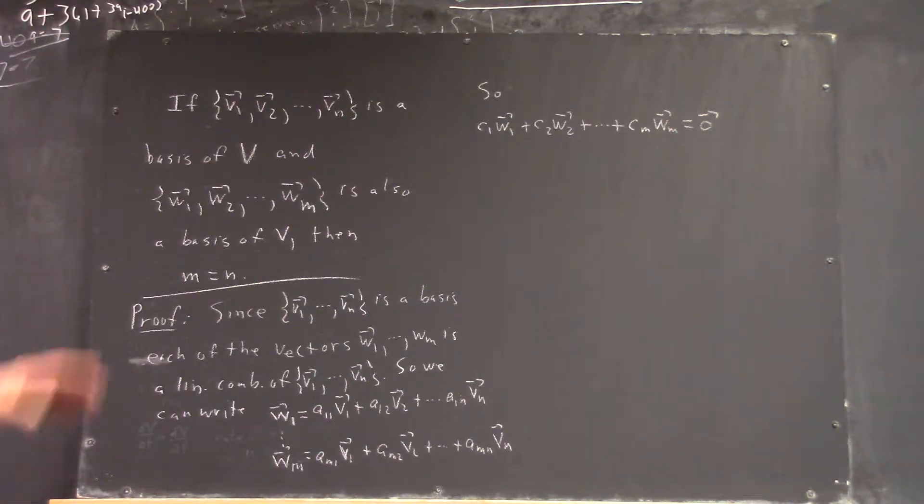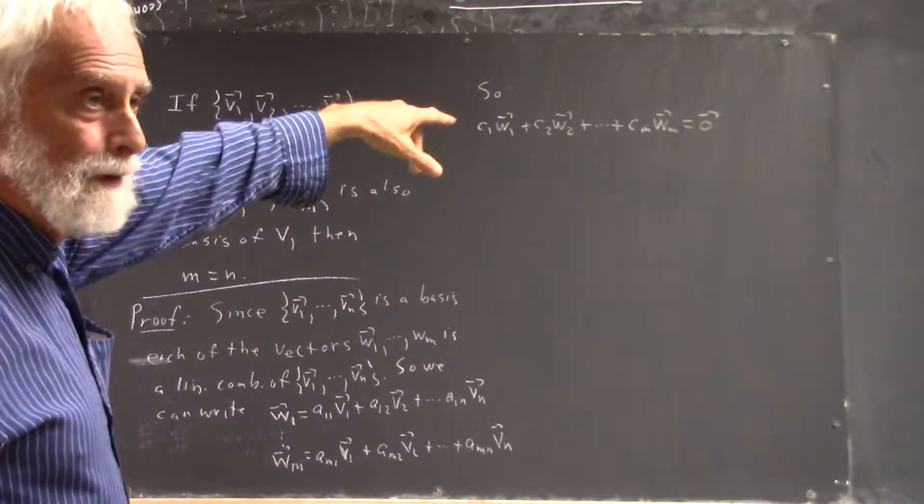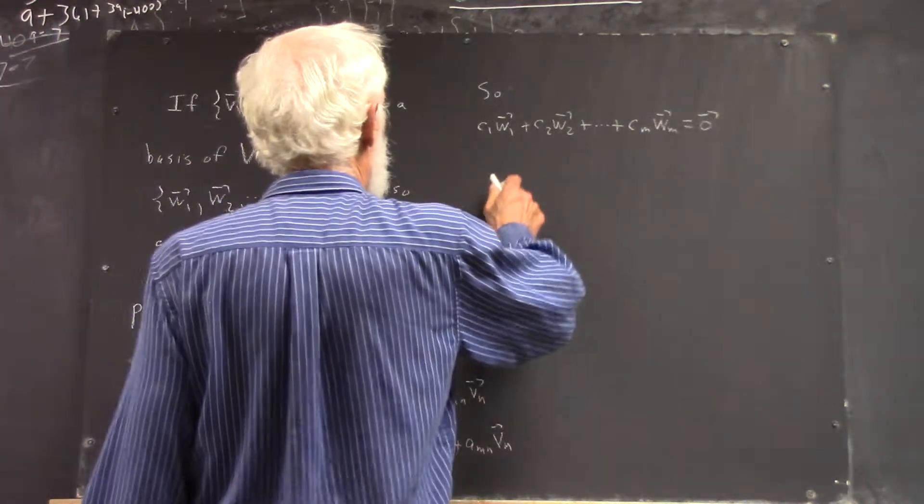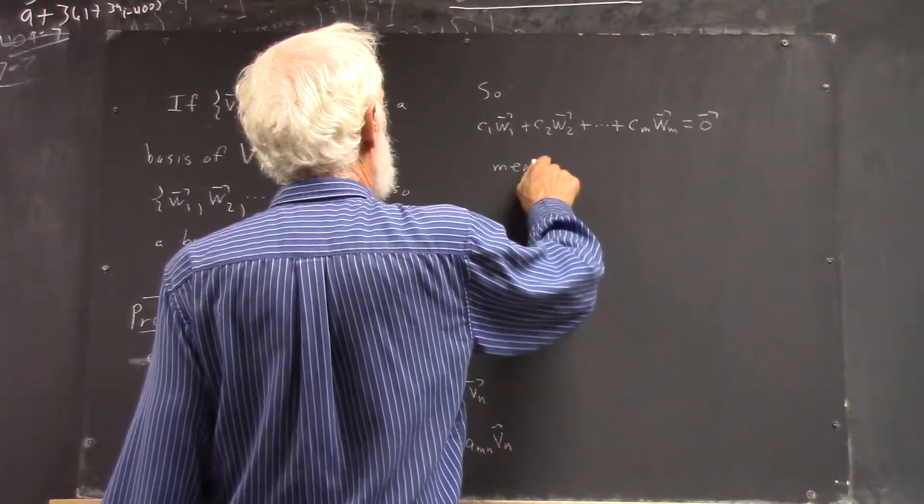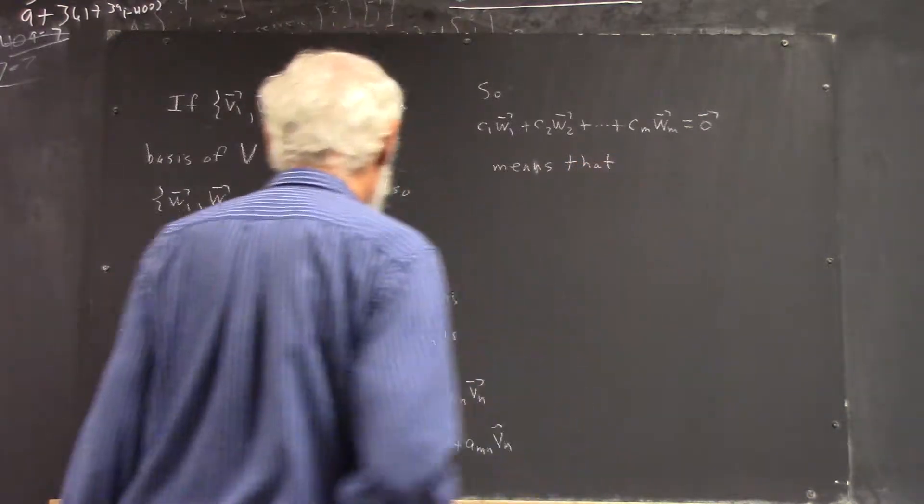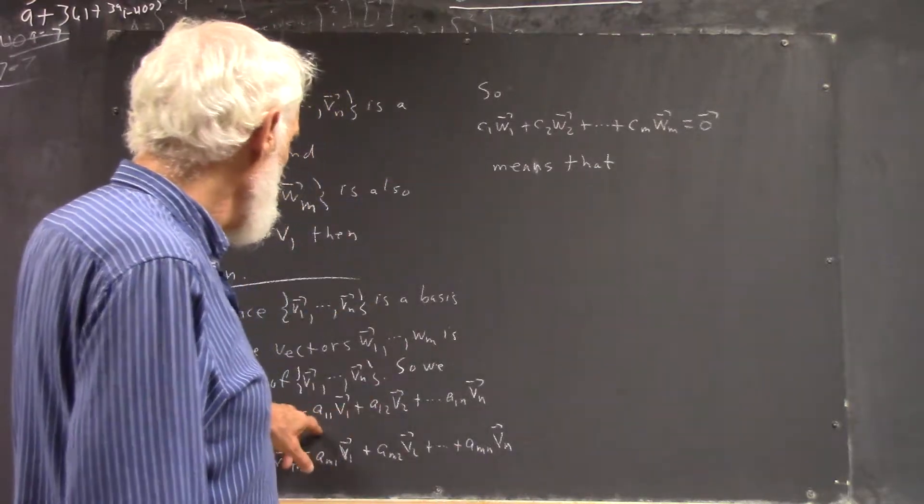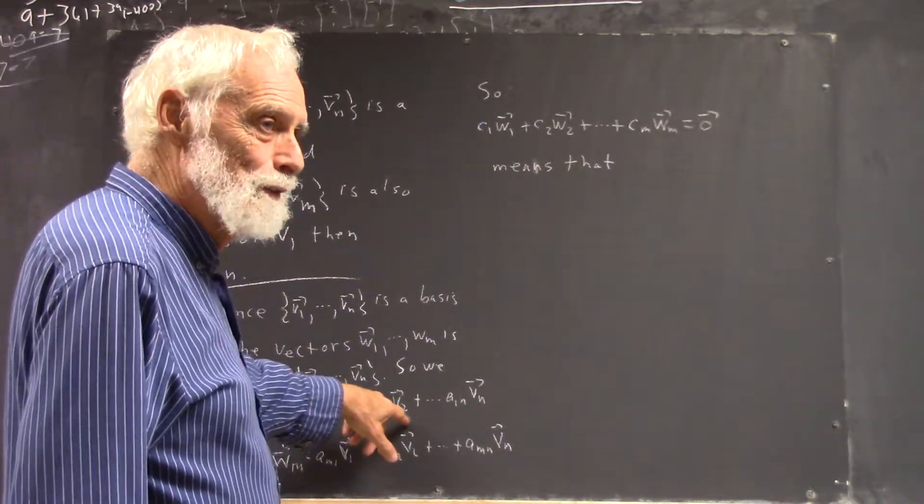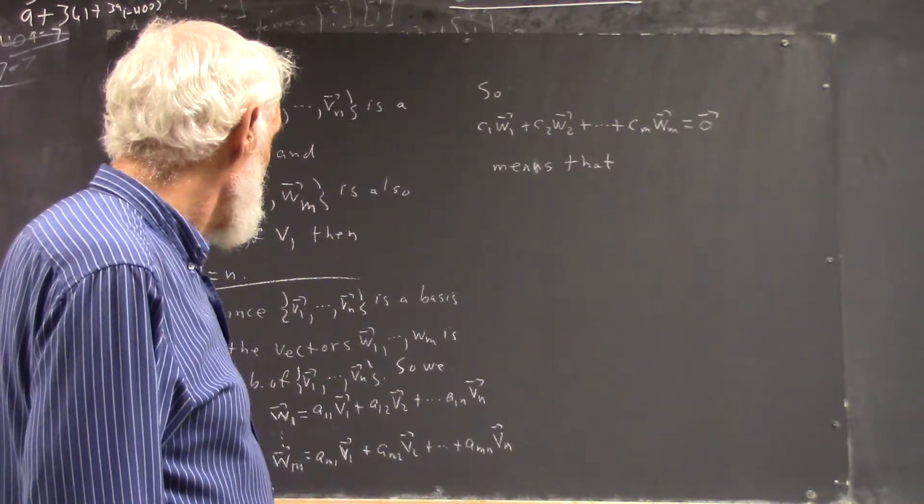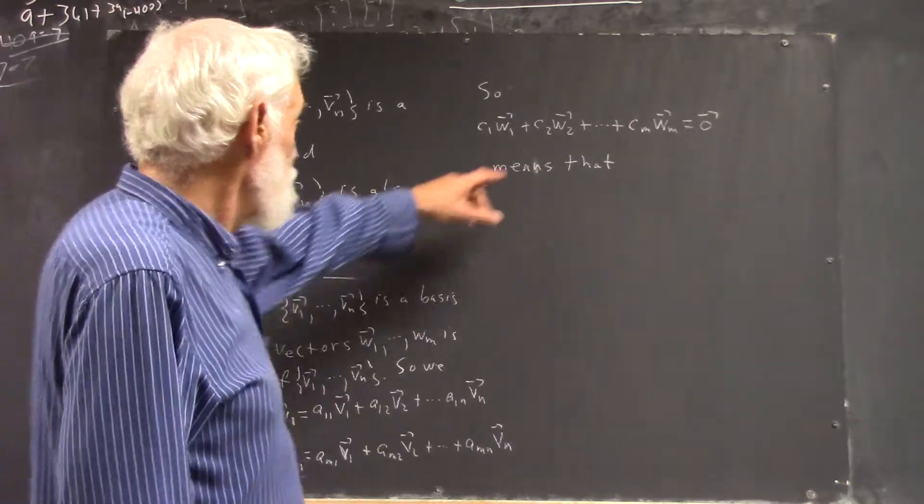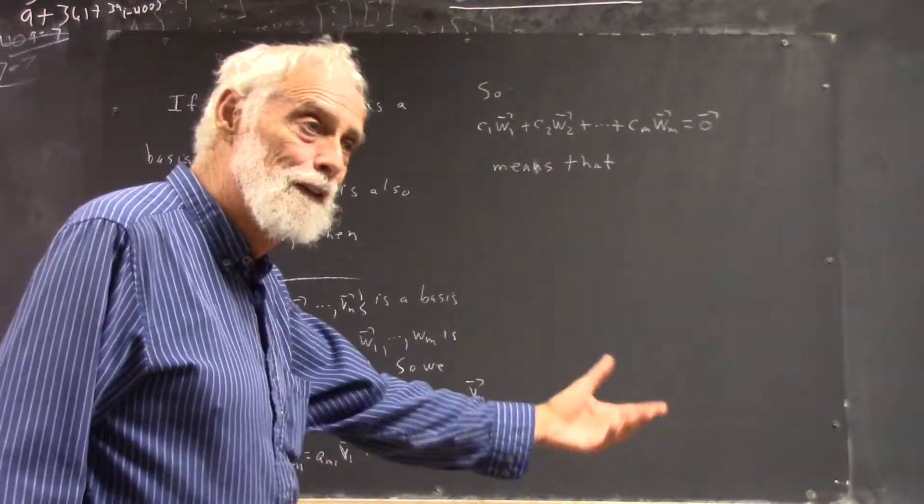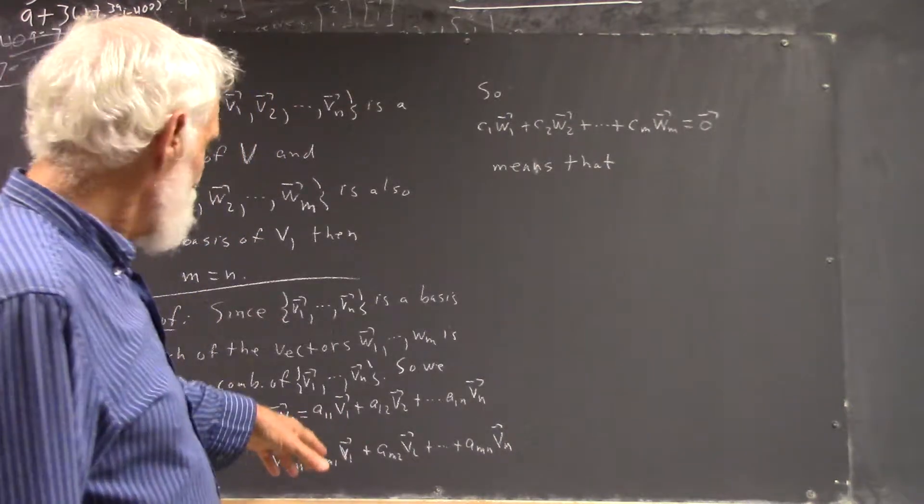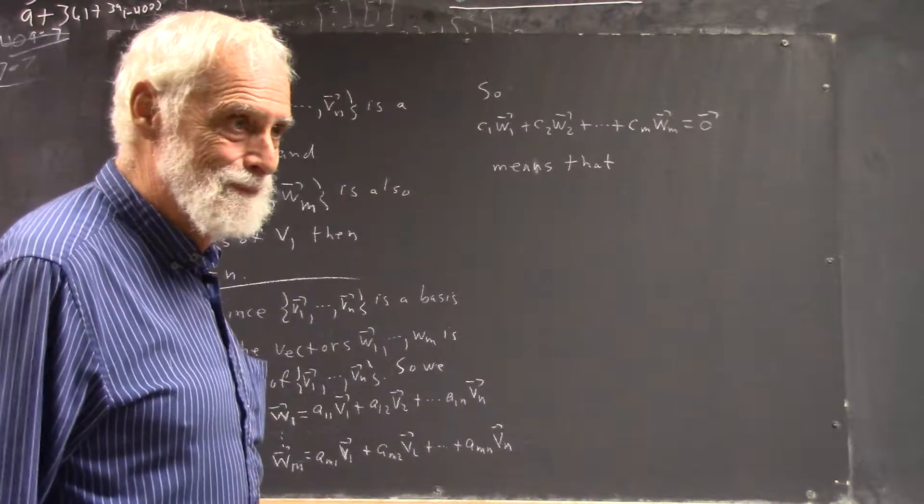So, C1 times W1 plus up through Cm times Wm, a linear combination of the W vectors equals zero. Means what? Means C1 times A11V1 plus C1 times A12V2 and so forth. Then plus C2 times all the A21 through A2n, and so forth. So this linear combination of all these vectors equals the zero vector.